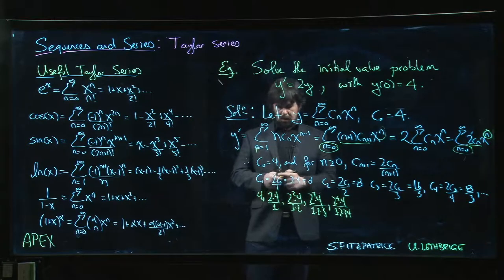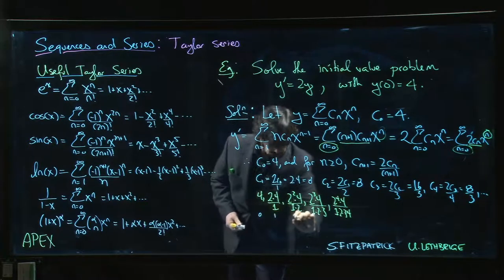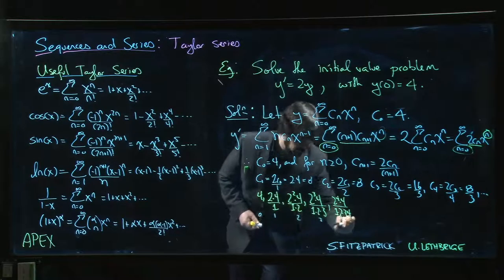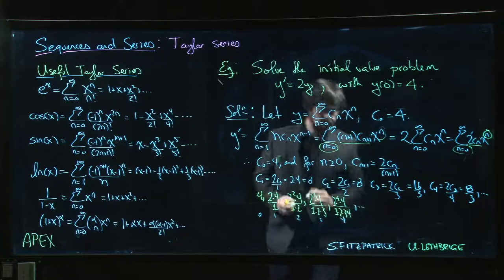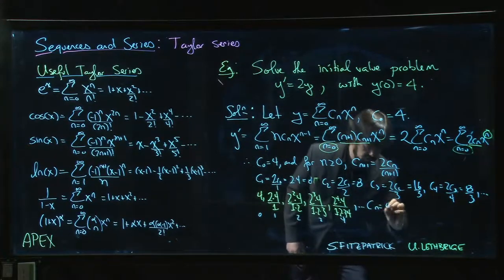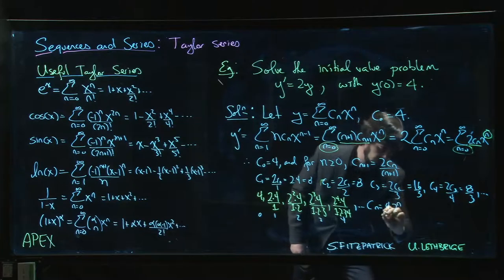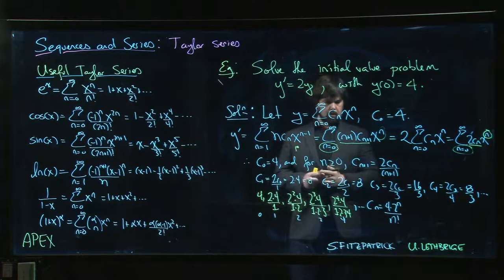At this point we can probably see the pattern. This is for 0, 1, 2, 3, 4. So in general, it looks to me like c_n is 4 times 2 to the n over n factorial.